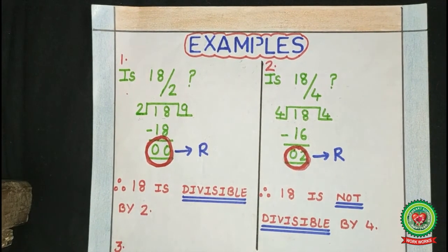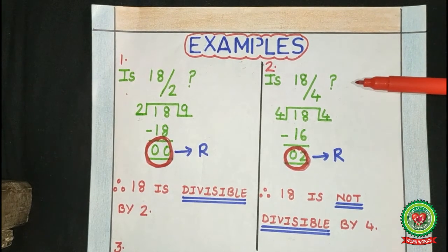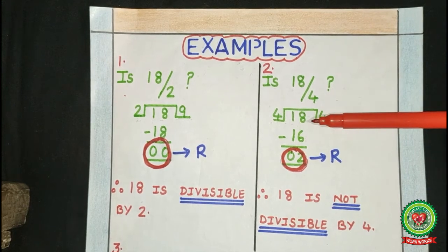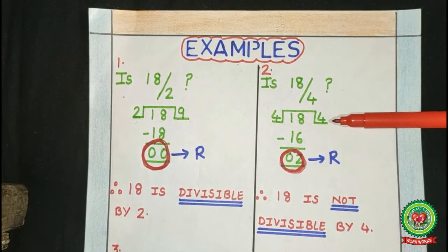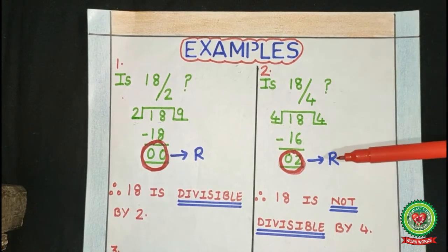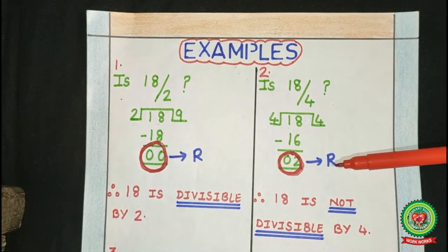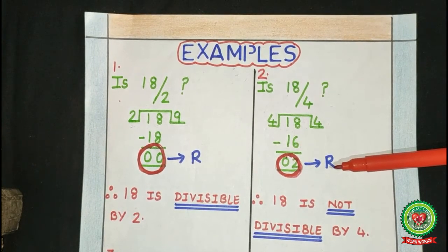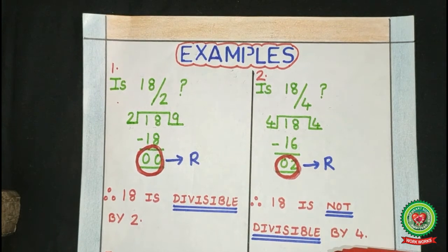Example number 2: Is 18 divisible by 4? When 18 is divided by 4, the quotient here is 4 and the remainder here is 2. Here the remainder is not 0. Therefore, 18 is not divisible by 4.